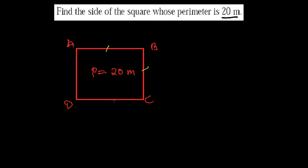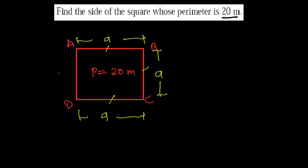One thing we know is that in a square, all the sides are equal. If this side is of length 'a', then each of the other sides should also be of length 'a' — all four sides are equal.